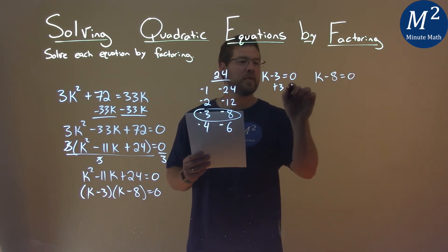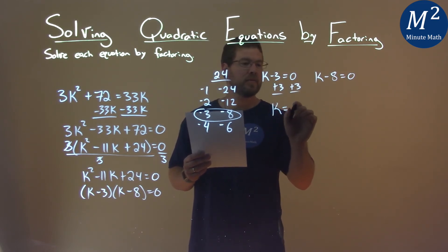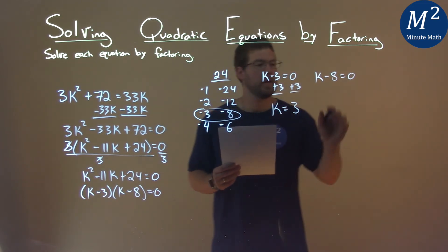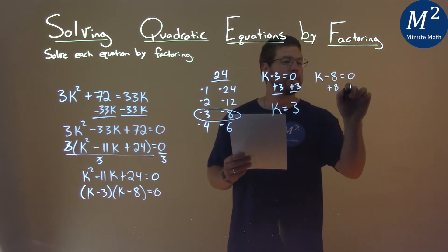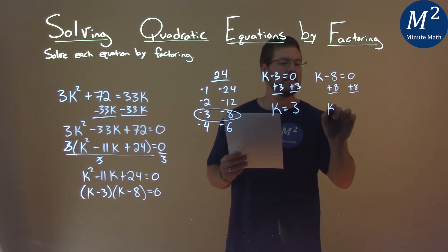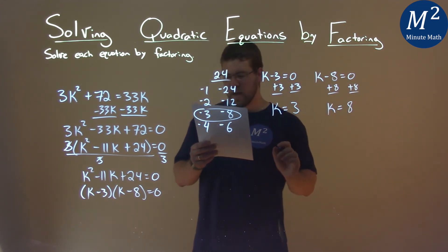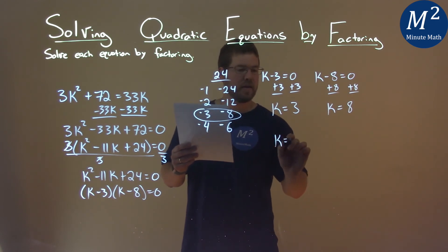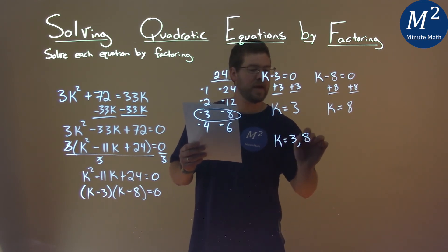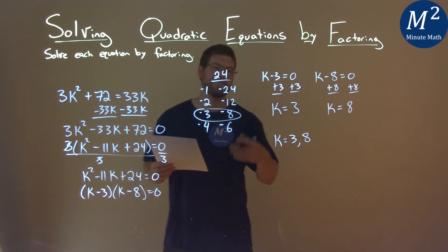We add 3 to both sides and k equals positive 3. We add 8 to both sides and k equals positive 8. And so my two solutions for k are k equals 3 and k equals 8. And that is our final answer.